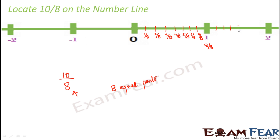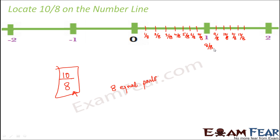Now if you continue this further, you would get 9 by 8, 10 by 8, 11 by 8, 12 by 8 and so on. So which is the fraction we wanted to locate? We wanted to locate 10 by 8. So 10 by 8 lies here — it is the fraction that lies somewhere between the integers 1 and 2. So in this fashion we locate fractions on a number line: find the denominator, divide each block into that many equal parts, start numbering, and that is how you find the required fraction on the number line.